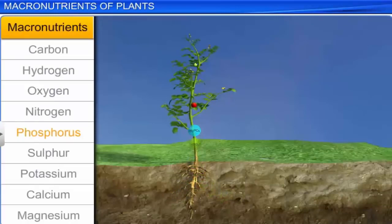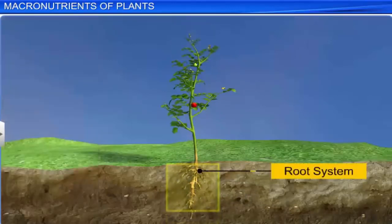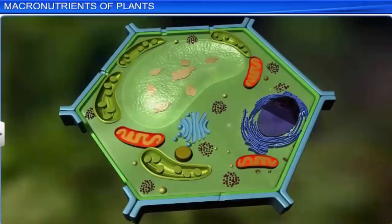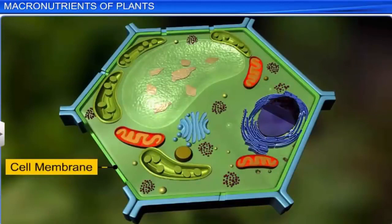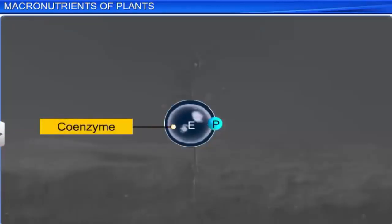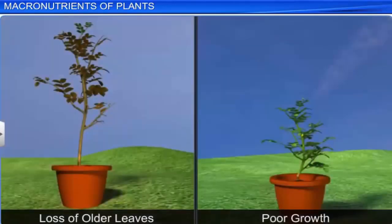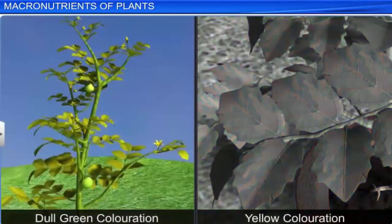Phosphorus is absorbed by plants from the soil in the form of phosphate ions. It is required more in younger tissues like root tip and stem tip. It promotes healthy root growth and fruit ripening. It is an important constituent of cell membranes, nucleic acids, nucleotides, and coenzymes. Phosphorus is required in all phosphorylation reactions of the plant. The deficiency of phosphorus causes symptoms like loss of older leaves, poor growth, dull green coloration of older leaves, and yellow coloration of lower leaves.